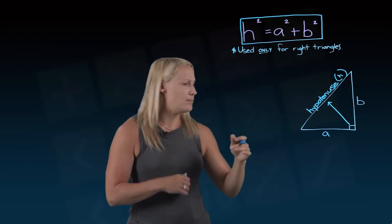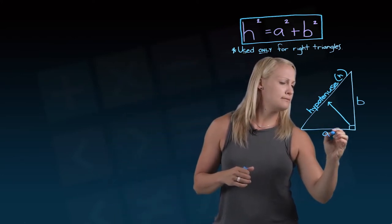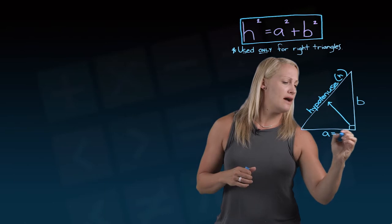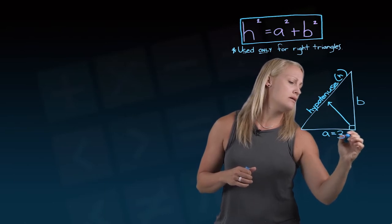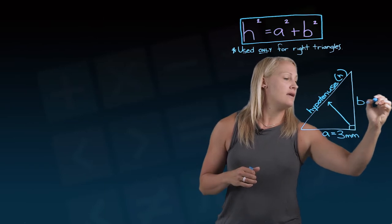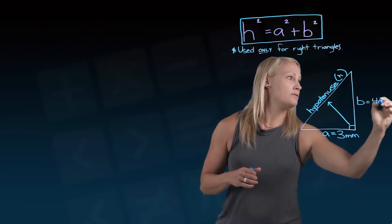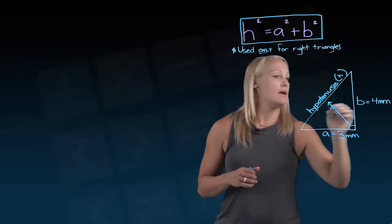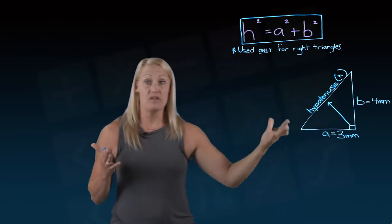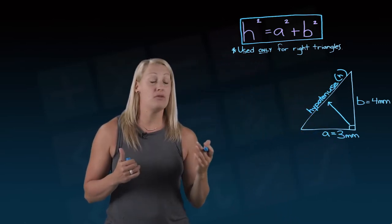So let's say, for example, in this triangle, if our a side is 3, let's do millimeters, and our b side is 4 millimeters. And the question would be then, what is the hypotenuse?